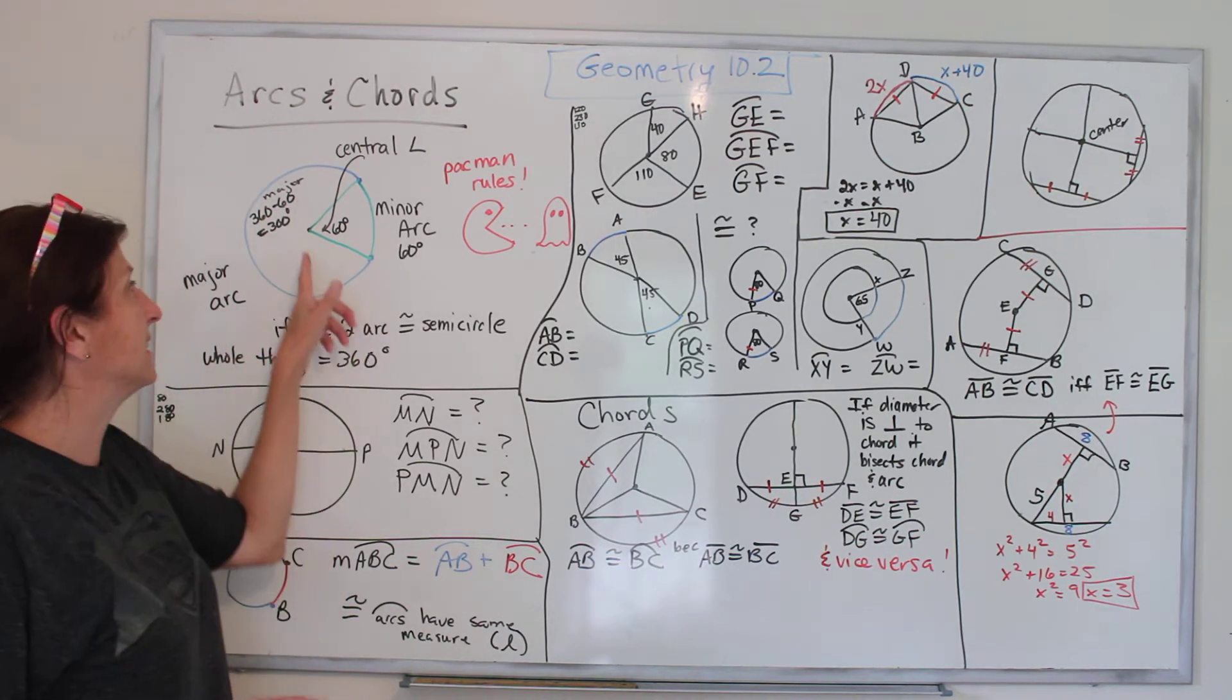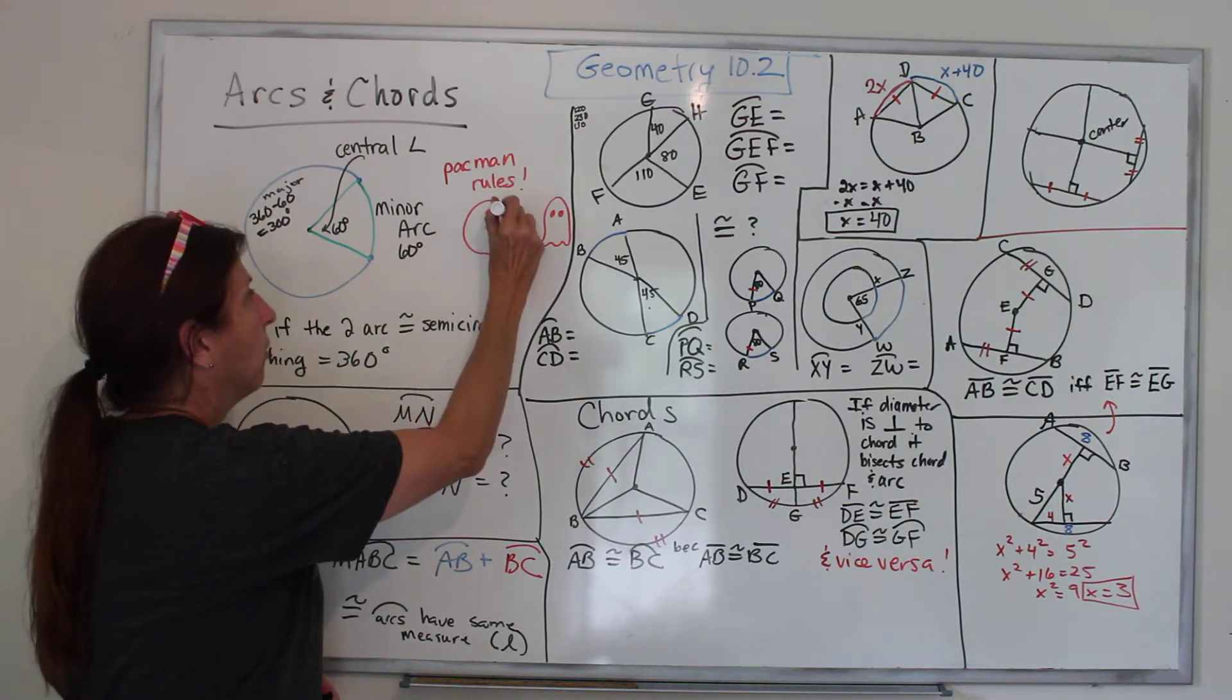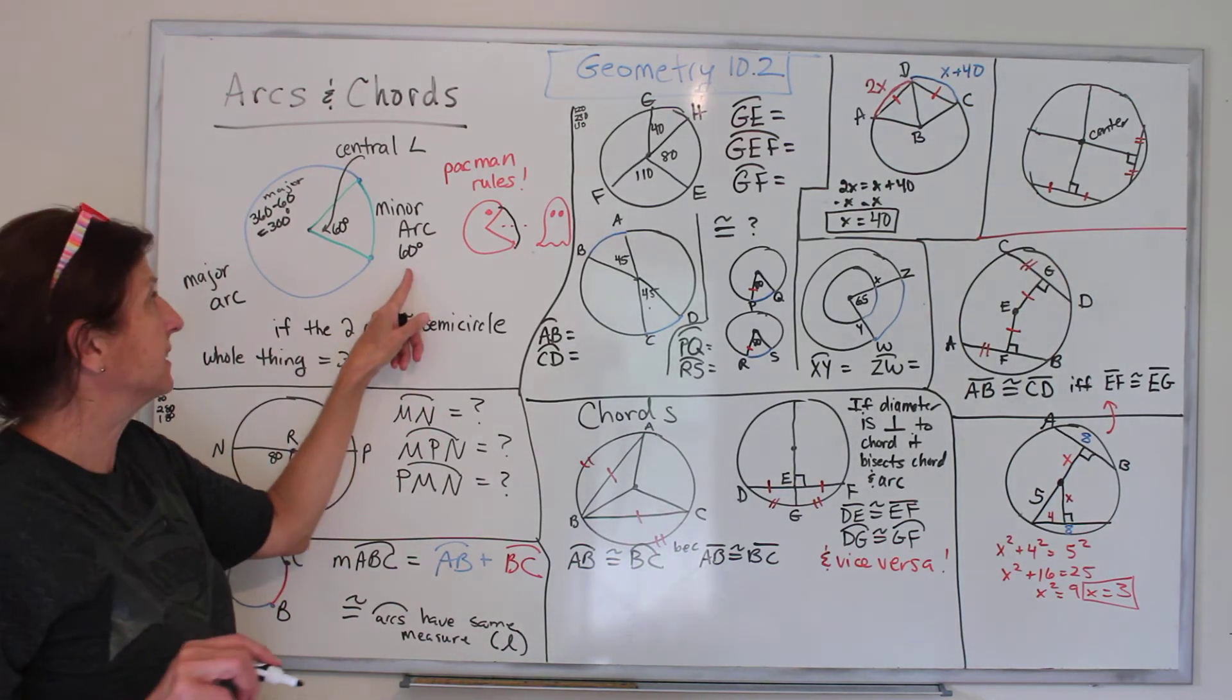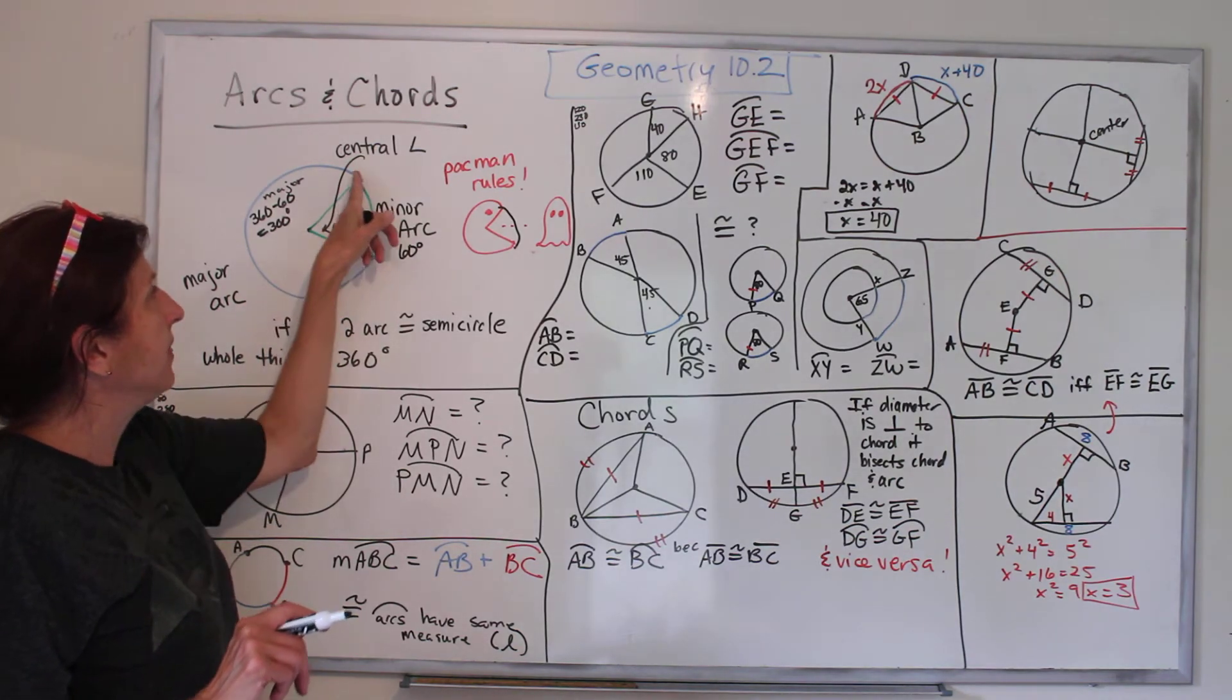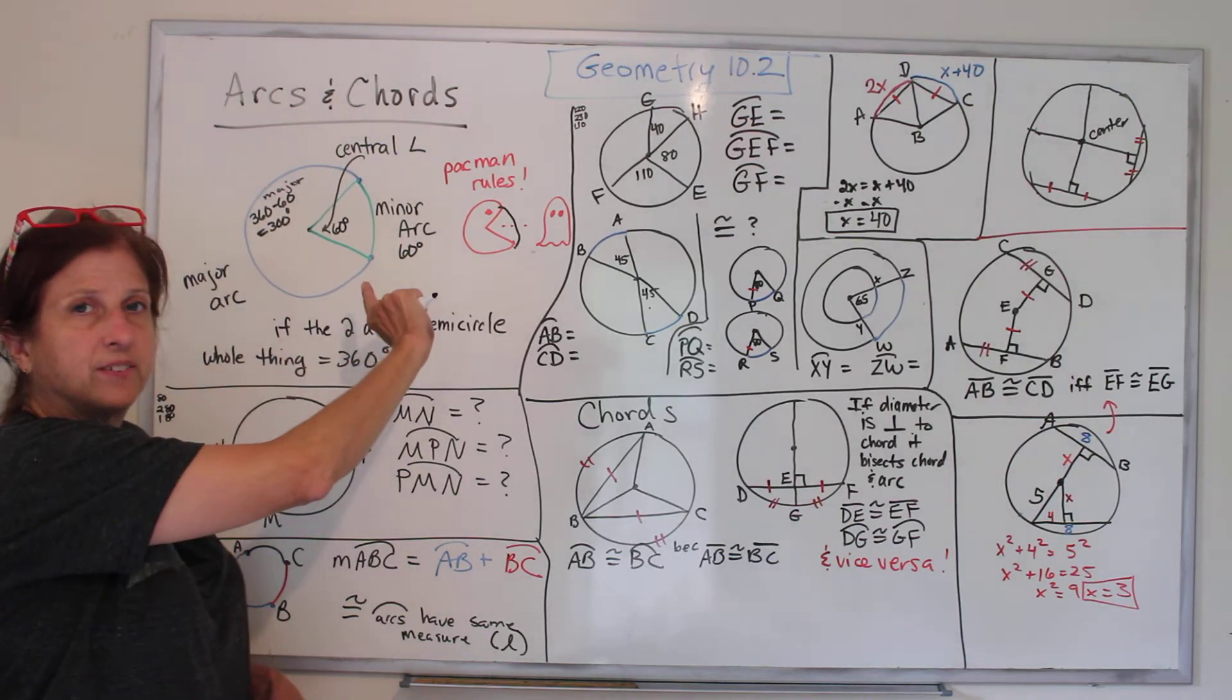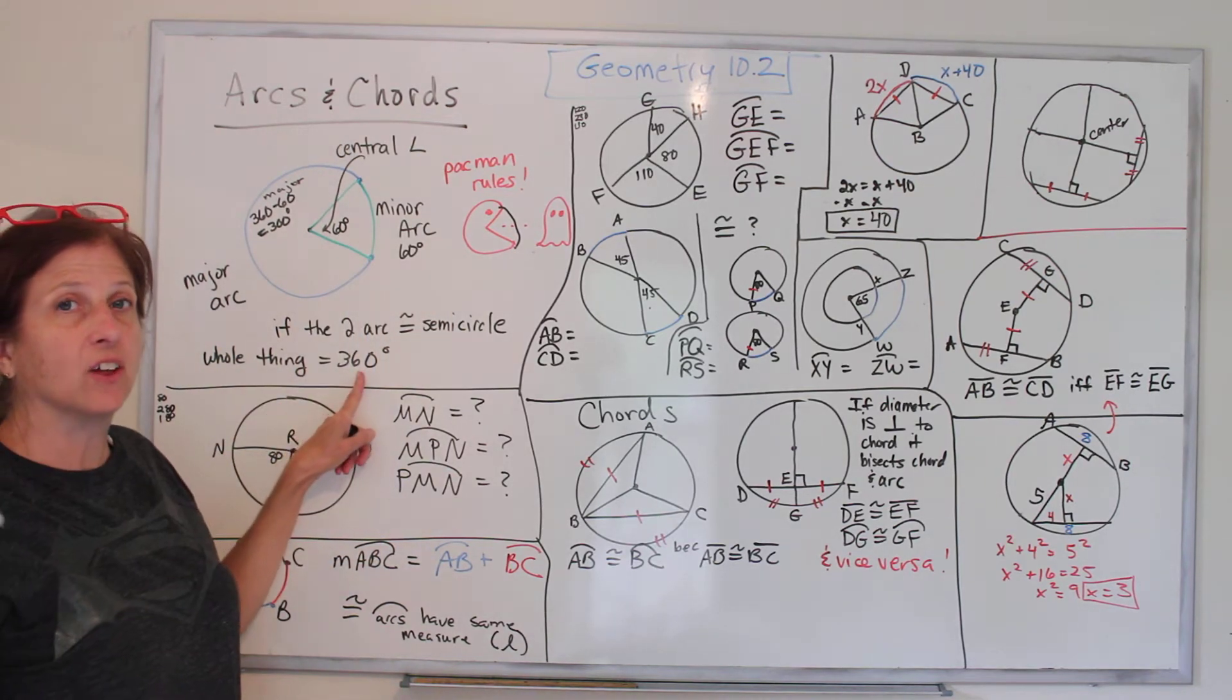So these little swooshes are called arcs. So if we draw a line shutting Pac-Man's mouth, it's an arc. There's an arc. And it turns out how you measure arcs, we measure them in degrees. So if the degree of the angle here is 60, then the degree of the arc is also 60. This is called the minor arc because it's little. And really there's another arc, the rest of his head, the big arc, which is called major.